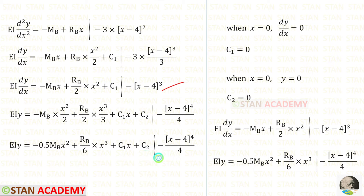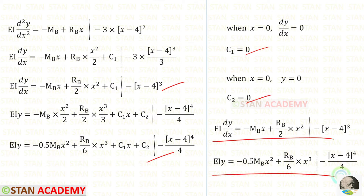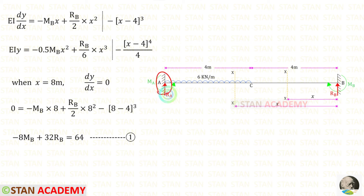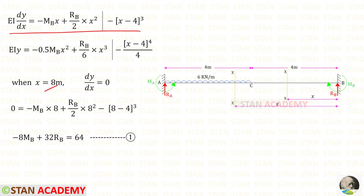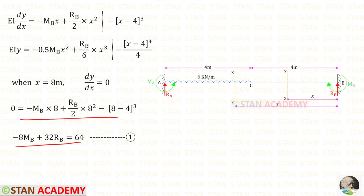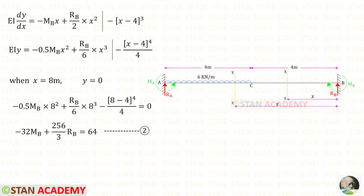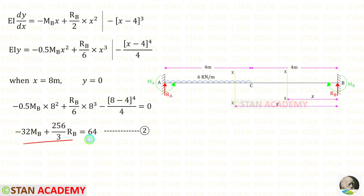In the slope and deflection equations let us apply the values of C1 and C2, giving us two simplified equations. At point A there is also a fixed support, so when x is 8, dy/dx will be 0. Applying this to the slope equation and simplifying gives Equation 1. Also at point A there will be no deflection, so when x is 8, y will be 0. Applying this gives Equation 2.